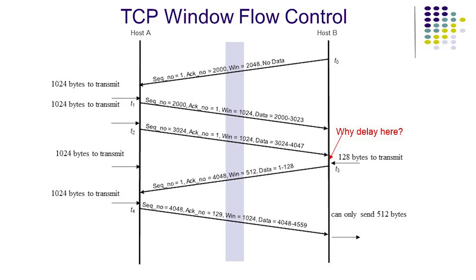When the segment is received, host B chooses to delay the acknowledgement in the hope that the acknowledgement may get a free ride with the data. Meanwhile, at time t2, host A has another 1024 bytes of data and transmits it. After the transmission, host A's sending window closes completely. It is not allowed to transmit any more data until an acknowledgement comes back.